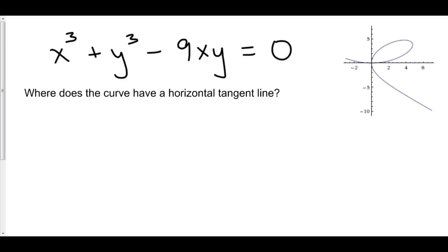Given the following curve, where does the curve have a horizontal tangent line? Now I've graphed this curve on Wolfram Alpha. We can see that we have a horizontal tangent line right here, approximately at x equals zero. And there's one more over here around four-ish.